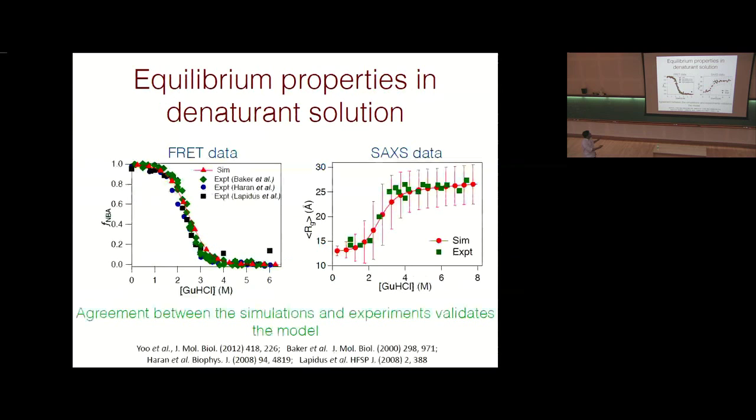Comparing simulation results to FRET data — plotting the fraction of protein in the folded state as a function of denaturant concentration — shows very good quantitative agreement between simulations and three experimental datasets. The SAXS data showing Rg as a function of guanidinium hydrochloride also shows very good agreement with simulations, validating the model.